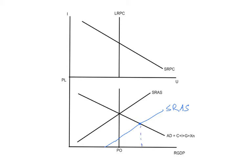As you can see, this is going to cause the price level to go down and the output level to go up. So we have price level one and price level two.